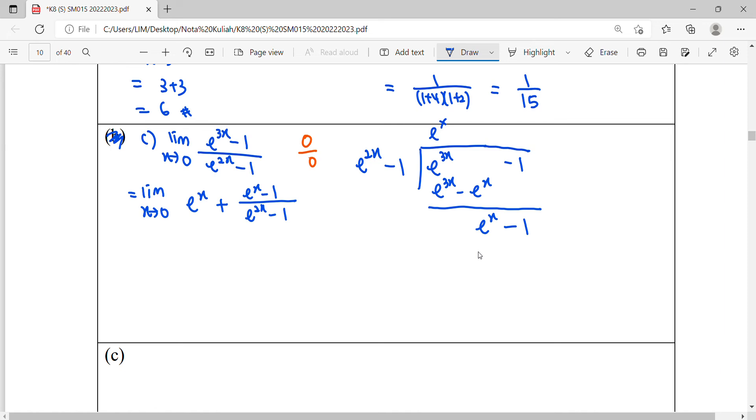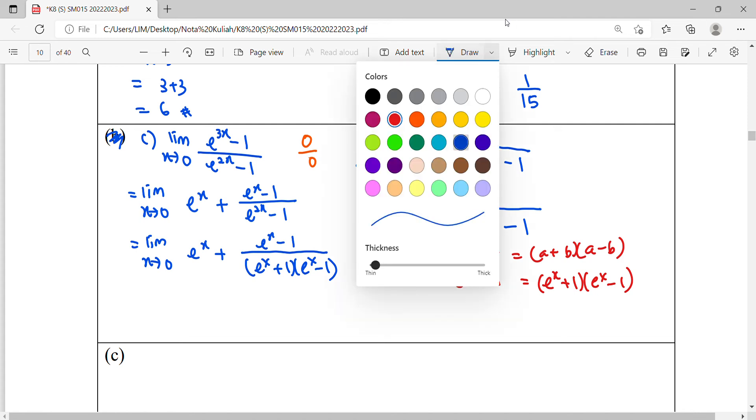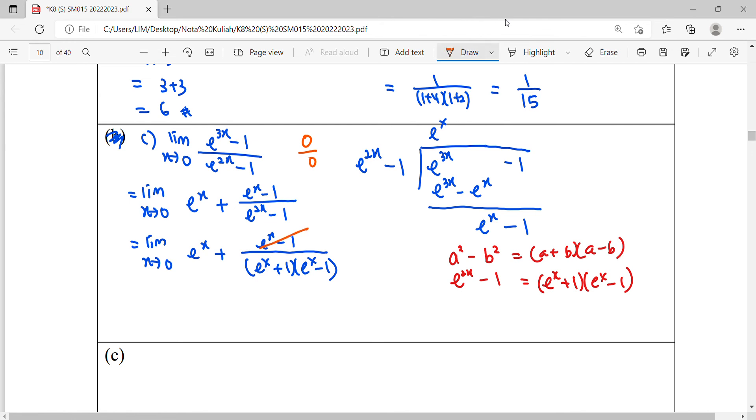Is this function already simplified? Not yet. You still can do your factorization, where e to X can be factorized, EX plus 1, EX minus 1. Because you can see it's in the form of A² minus B², e to 2X minus 1. What's your A? If e to 2X is A², so your A will be EX. If B² is 1, so B is still 1. So now you can notice that this factor can be simplified.